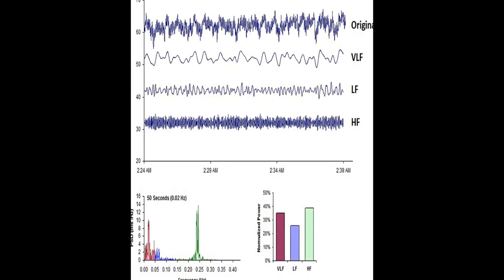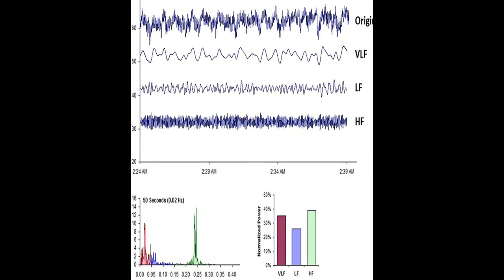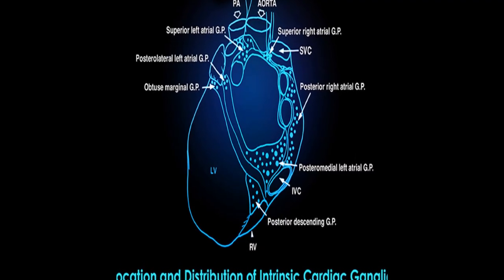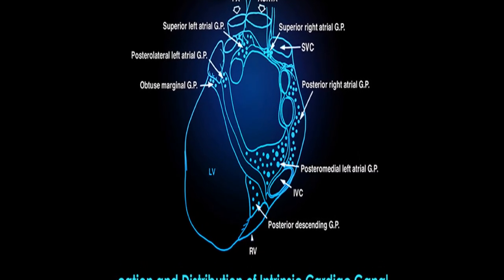Heart rate variability, HRV, is an emergent property of interdependent regulatory systems that operate on different time scales to adapt to challenges and achieve optimal performance.